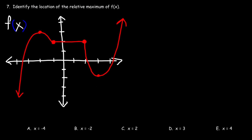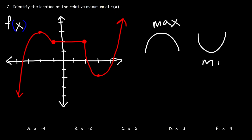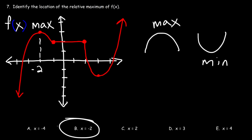Number 7. Identify the location of the relative maximum of f(x). The relative maximum looks like a mountain or a hill, while the relative minimum looks like a valley. The x-value is associated with the location of the relative extremum, so the relative maximum is located at x = −2. Therefore B is the right answer.